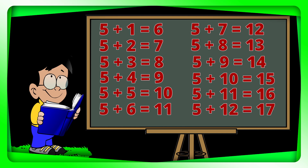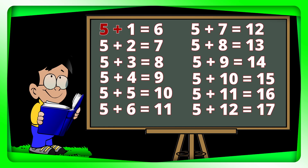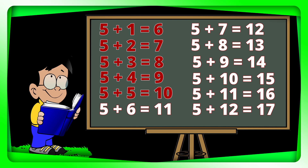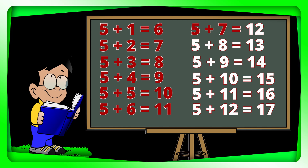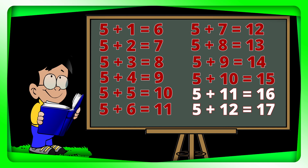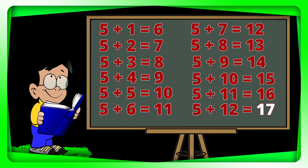Let's do it again. 5 plus 1 equals 6. 5 plus 2 equals 7. 5 plus 3 equals 8. 5 plus 4 equals 9. 5 plus 5 equals 10. 5 plus 6 equals 11. 5 plus 7 equals 12. 5 plus 8 equals 13. 5 plus 9 equals 14. 5 plus 10 equals 15. 5 plus 11 equals 16. 5 plus 12 equals 17.